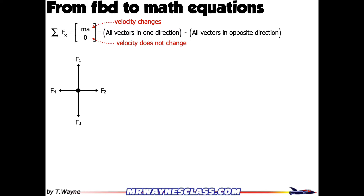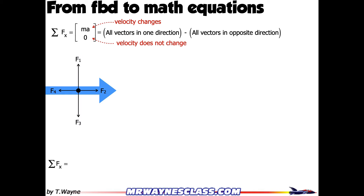Here's our free body diagram that we've already drawn, and I've got my forces labeled. All the forces going horizontally are going to create one summation equation, and all the forces vertically are going to create a second summation equation. So let's just look horizontally. I'm going to write the sum of the forces in the x direction, and that's going to equal zero — because in the horizontal direction, the lengths of the vectors are the same, so there's no net force and no net acceleration. I'm going to ignore F1 and F3 for the moment, just the horizontal ones.